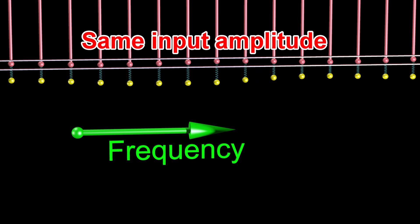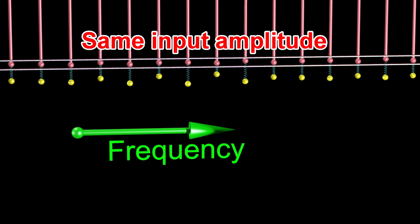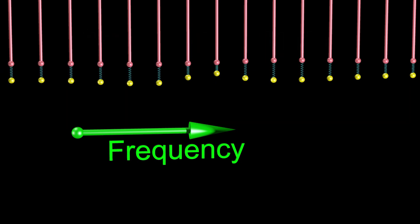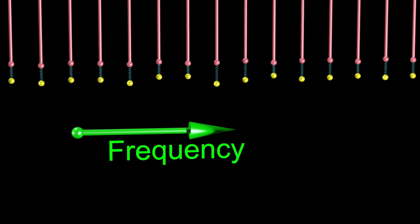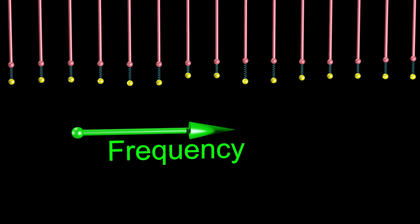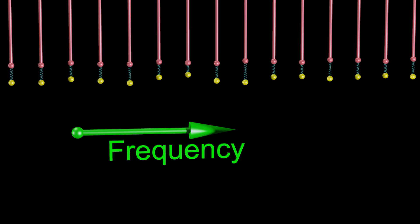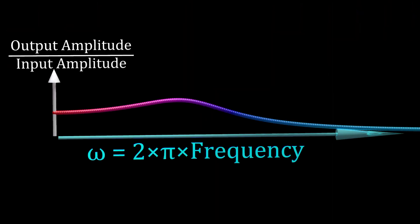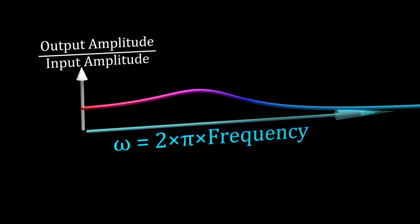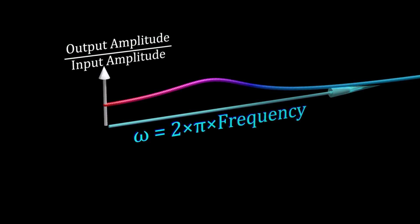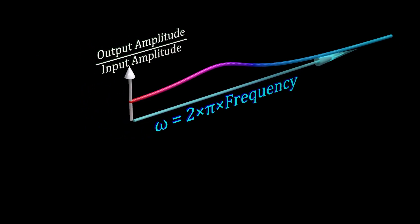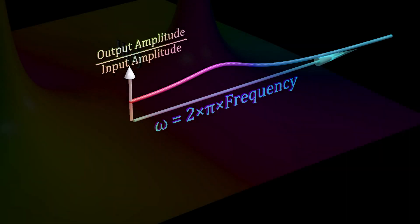The output of our system is the position of each yellow sphere. The frequency determines the ratio of the output amplitude to the input amplitude. The frequency response can be calculated from the system's transfer function.